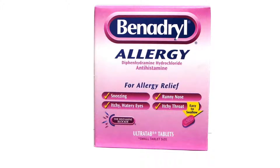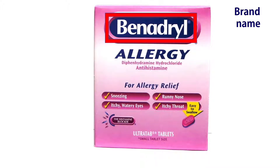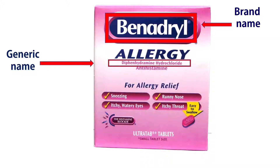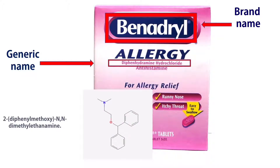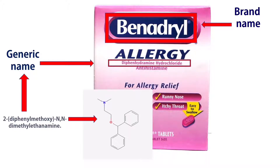Let's take an example for clarification. The Benadryl drug is an allergy drug — an antihistamine. The brand name is Benadryl, which is the company name. The generic name is diphenhydramine hydrochloride. The chemical name may not be found on the drug packet, but since the generic name is a shortcut of the chemical name, we may find it on the information paper of the drug.